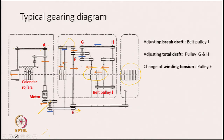In this machine, to adjust the brake draft, belt pulley G is the change pulley. If we increase or decrease the diameter of this pulley, the speed of the middle roller is going to change and as a result the brake draft is going to change. When you want to adjust the total draft, there are 2 pulleys: G and H. These 2 pulleys can be changed in terms of their diameter, and by this we will be able to change the speed of the back roller and the front roller and as a result the total draft is going to change.